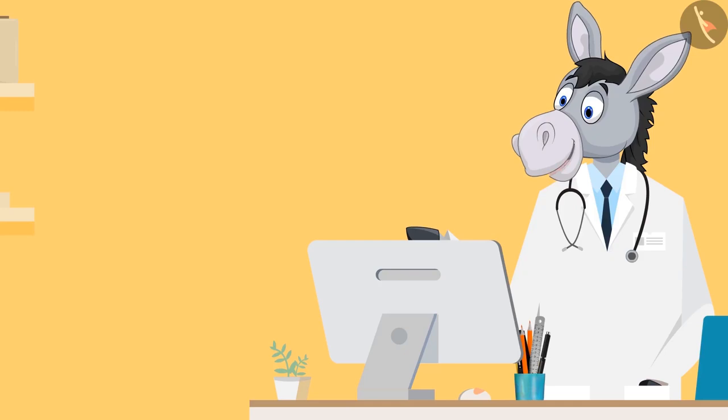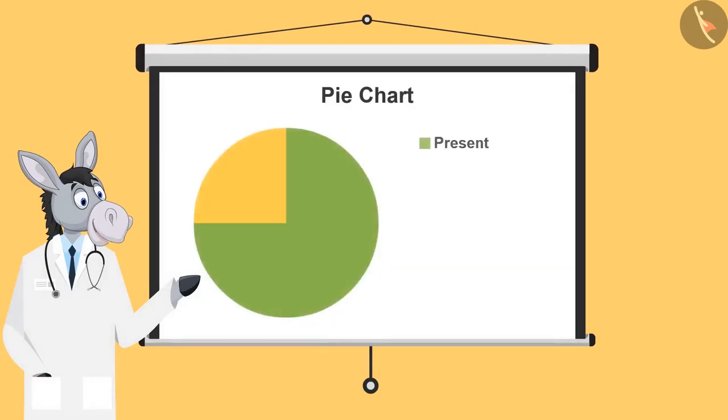Now let's look upon more examples. This pie chart shows how many students came to class today. If total strength of the class is 20, then how many students are absent today?